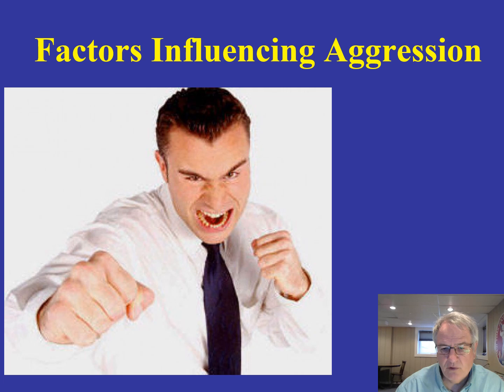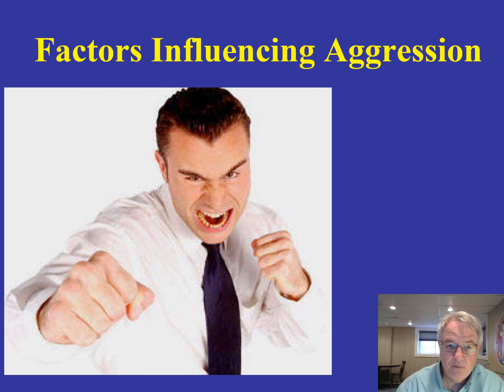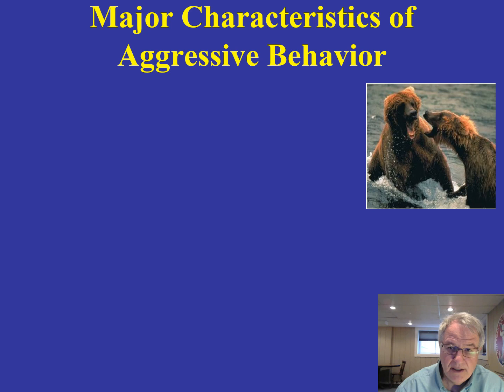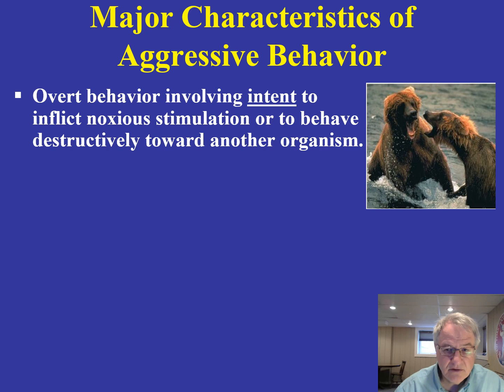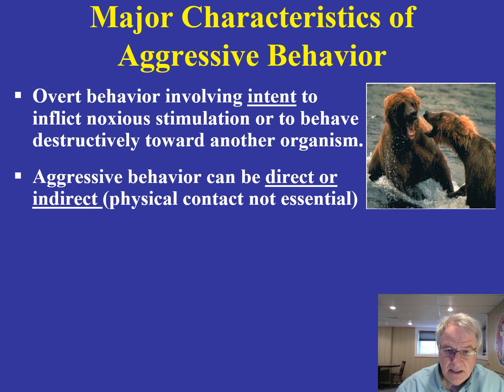When we begin to take a look at the factors that influence aggression, one of the things that is very important is that we first define what it is we are talking about. To define it, we have to look at the major characteristics of aggressive behavior. It's overt behavior, and a very important word we talked about in a previous lecture when looking at different theories of motivation: intent. It's intent to do harm, the intent to behave destructively towards another organism.